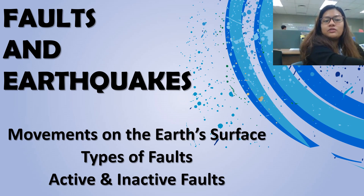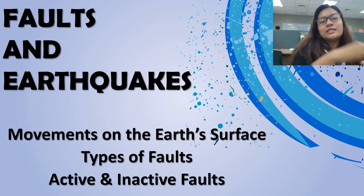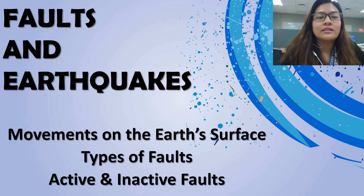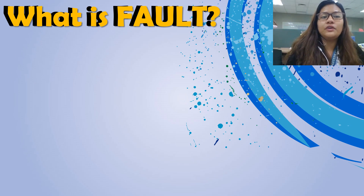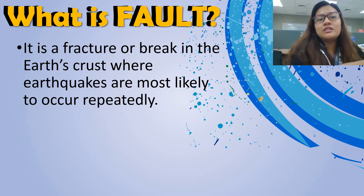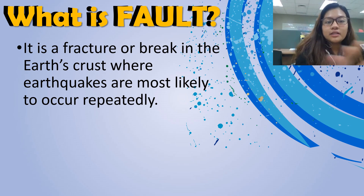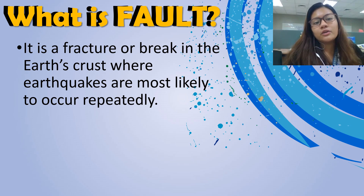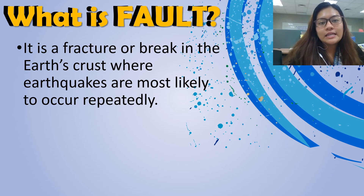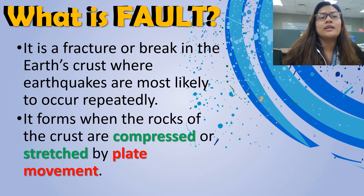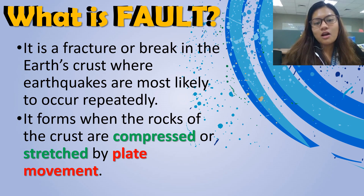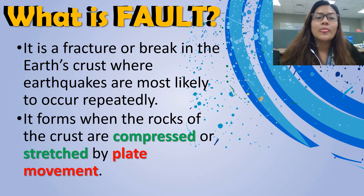We're going to talk about the types of faults, its activeness and inactiveness. What is a fault? Fault is a fracture or break in the crust where earthquakes are most likely to occur repeatedly — it can occur repeatedly. It forms when the rocks of the crust are compressed or stretched by plate movement.